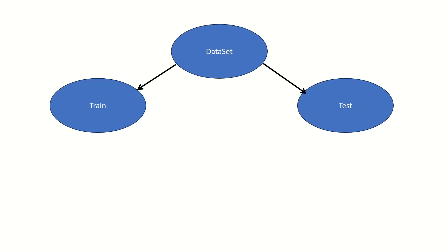In previous videos, what we did was merge the train and test. Then we followed the pre-processing steps and general machine learning steps. Then we predicted the model. Now, we are doing this — and this is a small drawback.